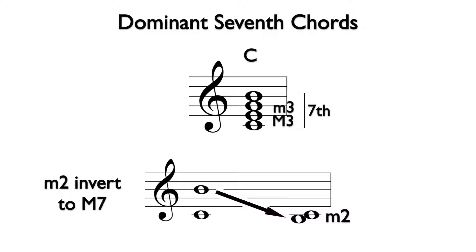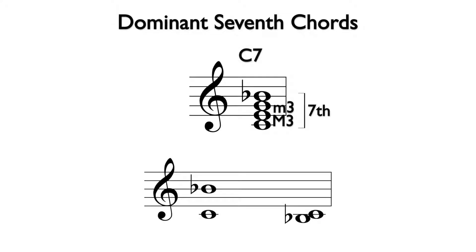Minor seconds always invert to major sevenths, so B is not the correct note to complete the dominant seventh chord. If we change the B to B flat, it lowers the major seventh to a minor seventh. Also, minor seventh intervals invert to major seconds.